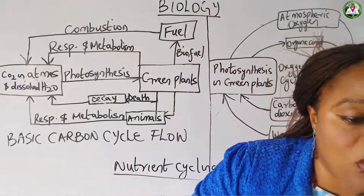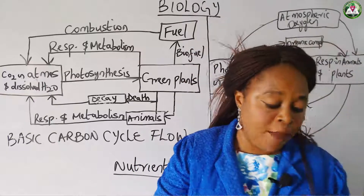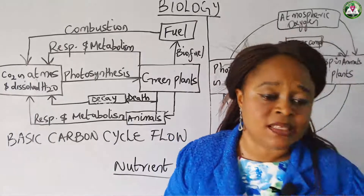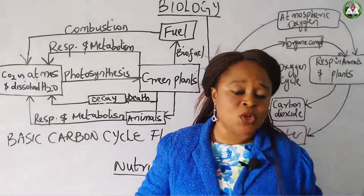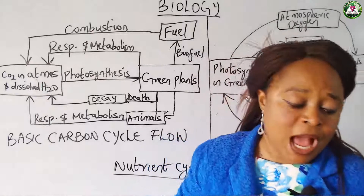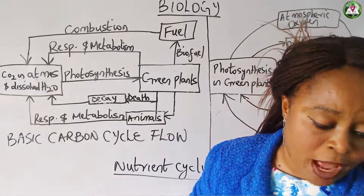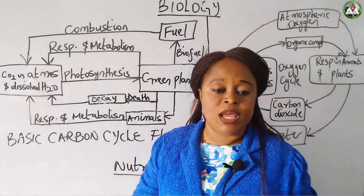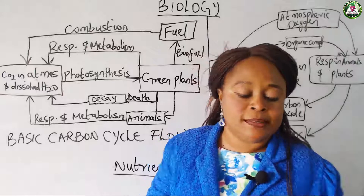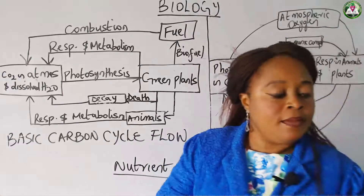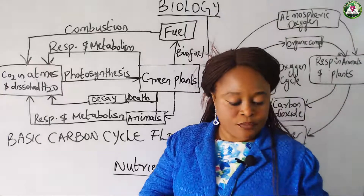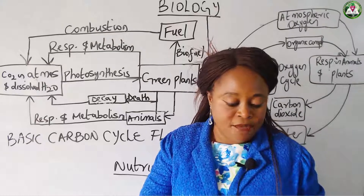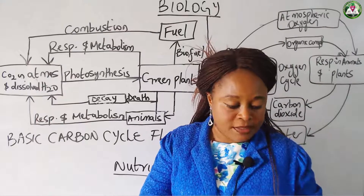So when we talk about the carbon-oxygen balance, we are talking about the process of respiration and photosynthesis, which helps to keep the oxygen and carbon dioxide levels in the atmosphere relatively constant. Thank you. This is the end of the class. I have some assignments for you.